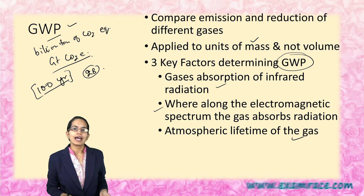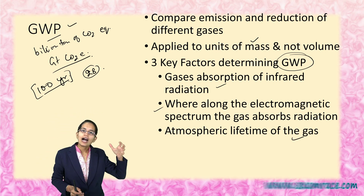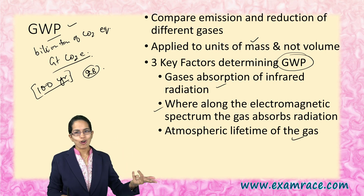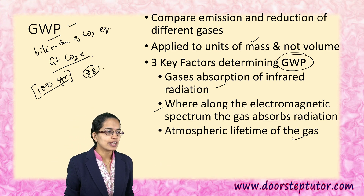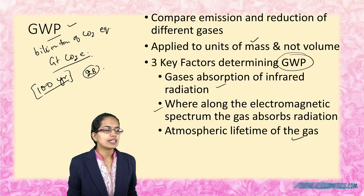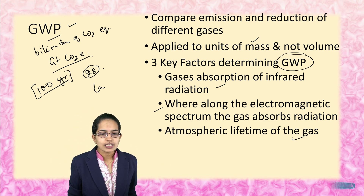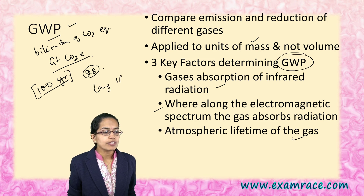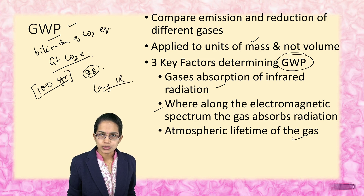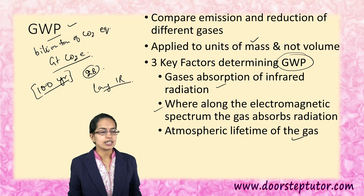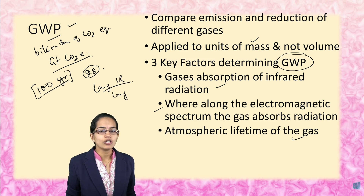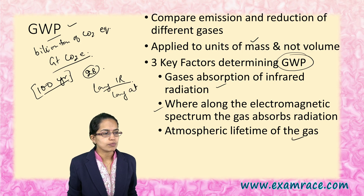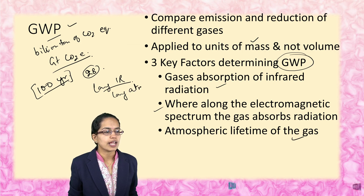Simply put, a higher value of global warming potential indicates that there is a larger amount of infrared absorption. And again, it has a longer atmospheric lifetime.